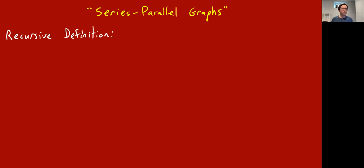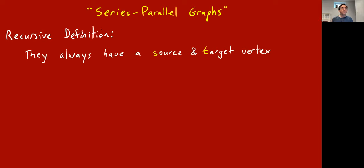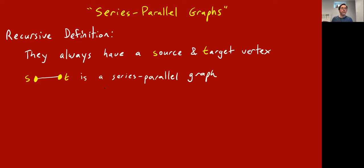What is a series-parallel graph? It has a recursive definition. First, in a series-parallel graph, you should always think there's a vertex called s and a vertex called t — some special source and target terminals. The base case is that a single edge with endpoints called s and t counts as a series-parallel graph.